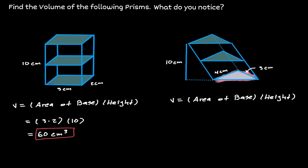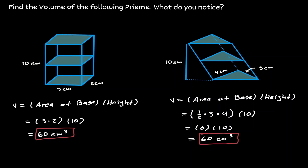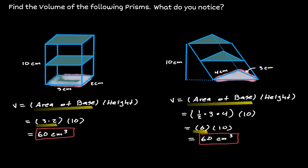Now in the prism on the right, to find the area of the base we find the area of the triangle, which is one-half times the base — which we can see is 3 — times the height, which we can see is 4. And the height of the prism is also 10. That is equivalent to 6 times 10, which is 60 centimeters cubed. Notice that both figures have the same volume. That happened because both figures have the same area on the base: the triangular base was equivalent to 6 centimeters squared, and the rectangular base also had a value of 6 centimeters squared. So if two prisms share the same area of the base and the same height, we can conclude that those two figures have the same volume.